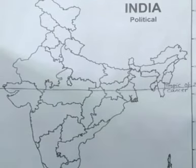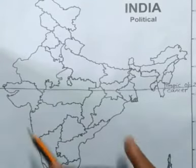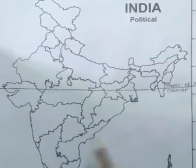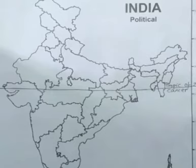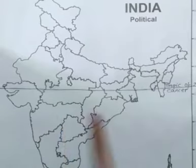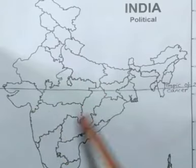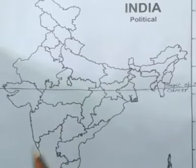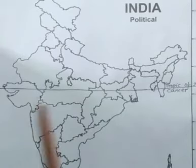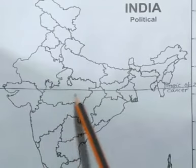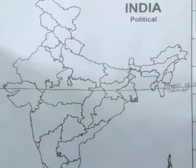India is a peninsular country because three sides are covered by water — Arabian Sea, Bay of Bengal, and Indian Ocean — and the fourth part is connected with the mainland. A land surrounded on three sides by water and connected by land on one side is called a peninsula.